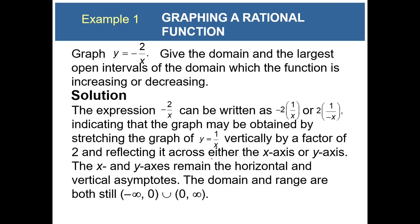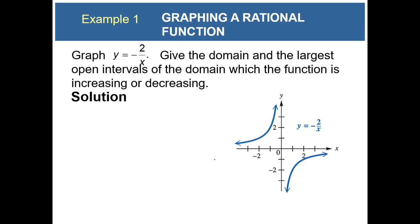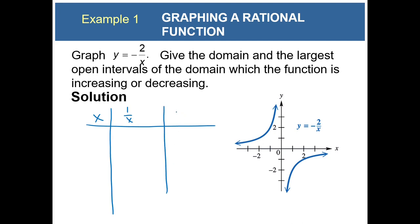The domain and range is still negative infinity to zero union zero to infinity. To do this problem, I'm going to make a table. I'll pick x values, take the reciprocal, and finally multiply by negative two.